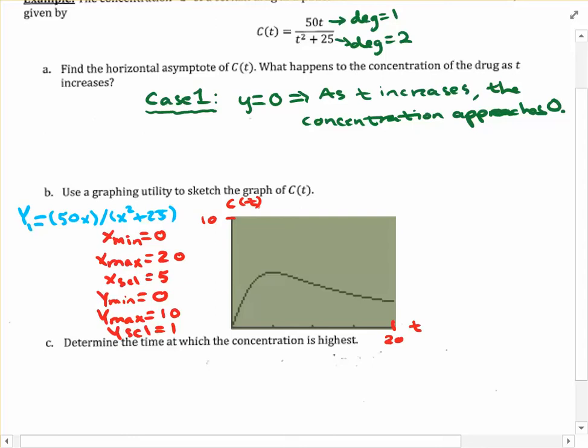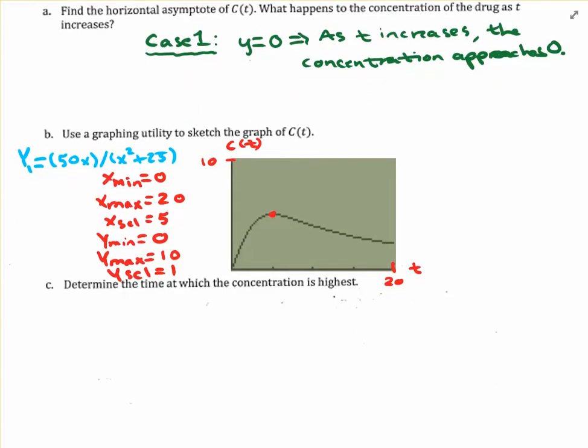So that takes us to part C where they want us to determine the time at which the concentration is highest. So based on our graph, this is definitely something that makes sense and is doable because looking at our graph, there appears to be some sort of absolute maximum. All right. And it's about right here. So for part C, what you want to do is use the graphing calculator to figure out the location of this absolute maximum. Of course, you'd have to do second trace, choose the maximum feature, then left bound, right bound, so on and so forth. You guys know the routine by now, though.